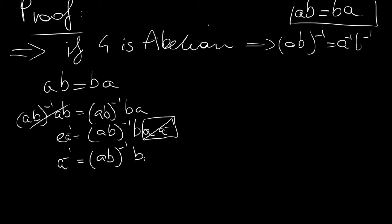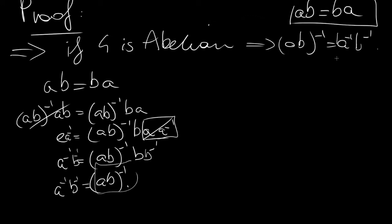Now we multiply by B⁻¹ on the right, and we get A⁻¹B⁻¹ equals (AB)⁻¹. We're done with the first part of the proof: if G is abelian, then (AB)⁻¹ equals A⁻¹B⁻¹.